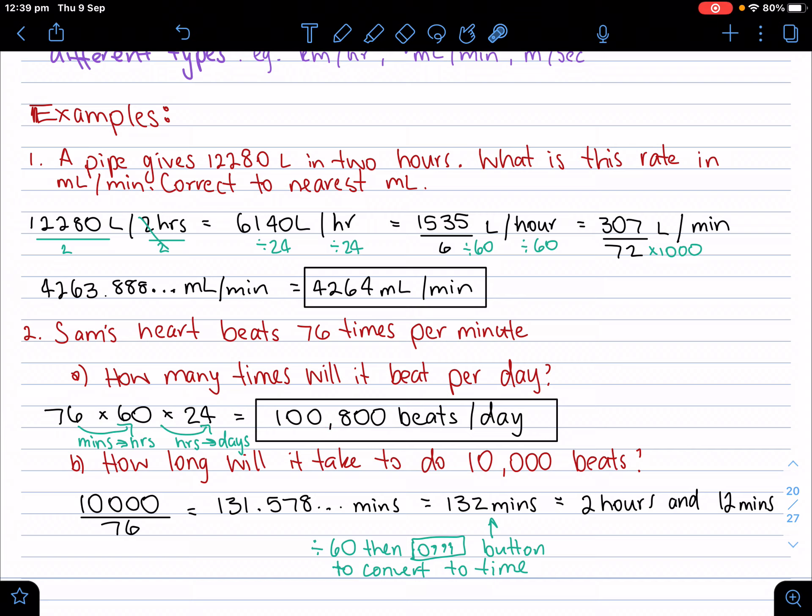Pretty simple. Let's go on to part B. How long will it take to do 10,000 beats? Well, if it does 76 beats per minute, then we just do 10,000 divided by 76. It gives me 131.578 continuing minutes, and we round that up to the nearest minute, so that becomes 132 minutes.